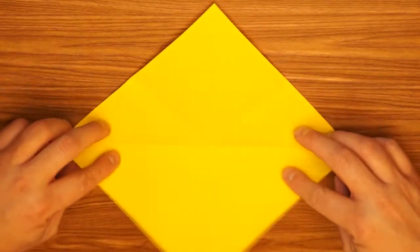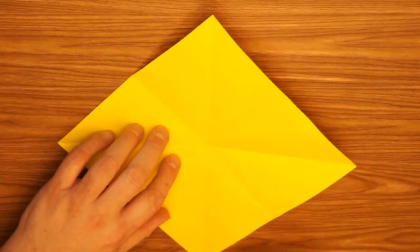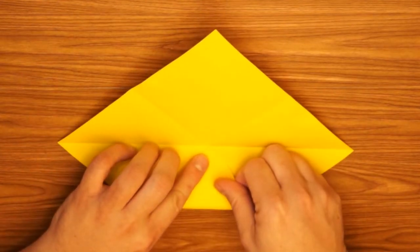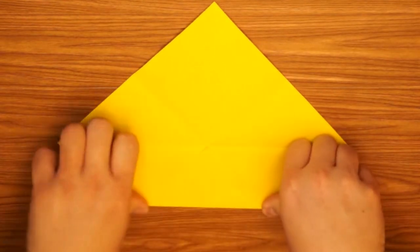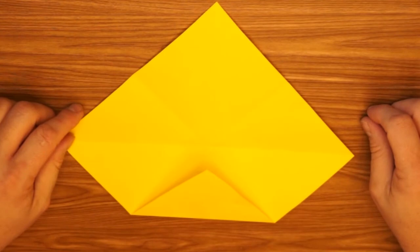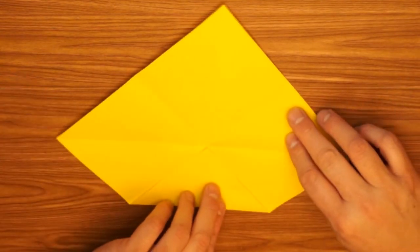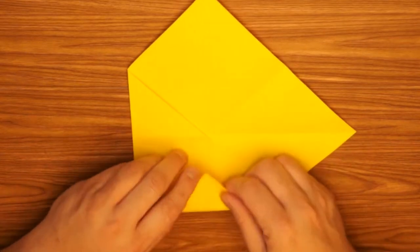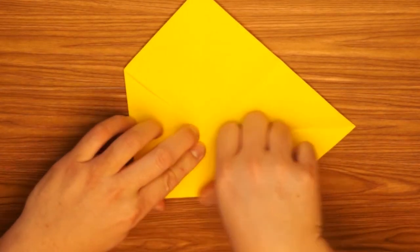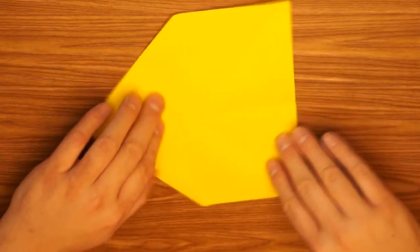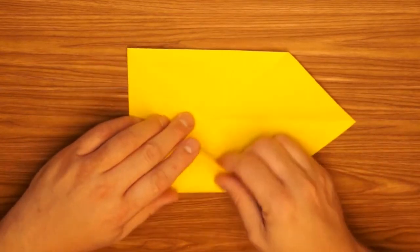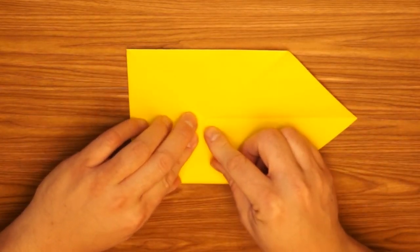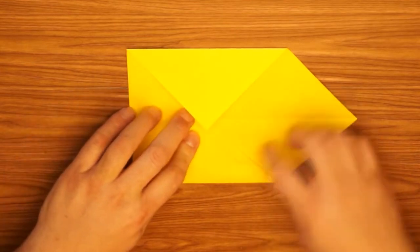Open this up and we're going to fold the bottom point to the middle. Turn it to the next point and we're going to repeat this step on the remaining 3 points. All four corners should go to the center. They should touch but not overlap.